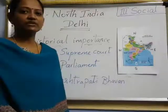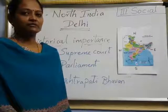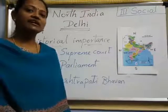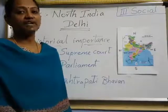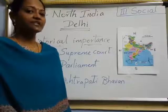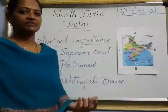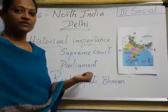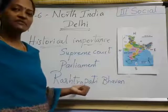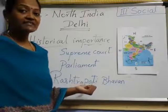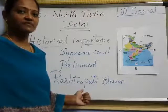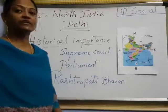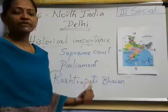What are those important places? Historical importance. Why do we call those as historical importance? Because Mughals and British ruled at that time in Delhi. At that time, they constructed some buildings — those we call as monuments. These are all monuments. And Parliament is the government house of India. Rashtrapati Bhavan — who lives in this place? President of India lives in Rashtrapati Bhavan. And which is the highest court? Nothing but Supreme Court. Supreme Court is the highest court of India. Remember all these three — very, very important.